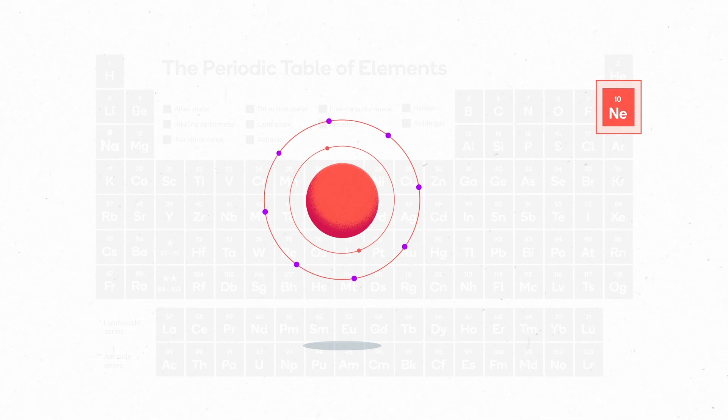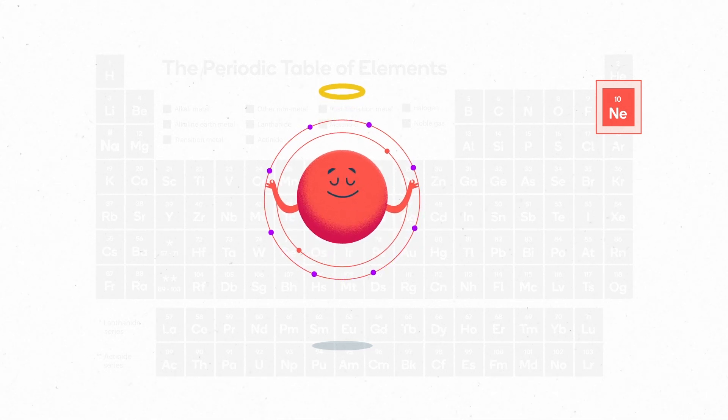Neon has a full outer shell with 8 electrons. There's a rule of thumb that atoms prefer to have a full valence shell. Since neon has this, it doesn't need to react with other atoms. It's satisfied all by itself.